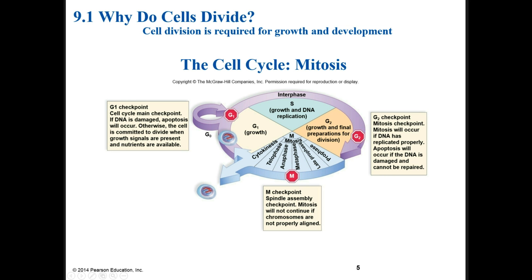The cell cycle consists of interphase, which is broken down into three sub-phases — G1, S, and G2 — and then mitosis and cytokinesis. The main goal of interphase is for the cell to prepare for cell division. In mitosis, the cell separates the duplicated chromosomes, and then in cytokinesis, the cell separates in half. Make sure you know the various stages of interphase and mitosis and cytokinesis and what happens in each stage.